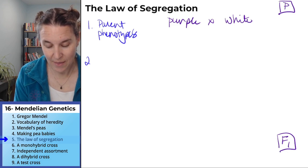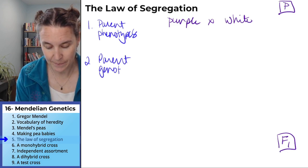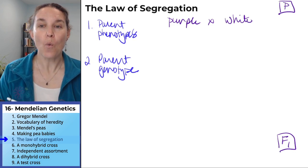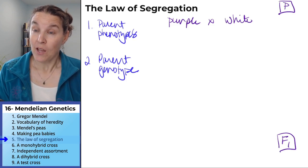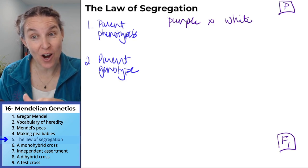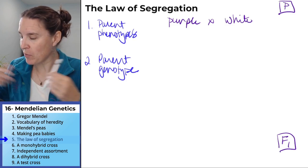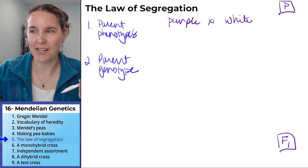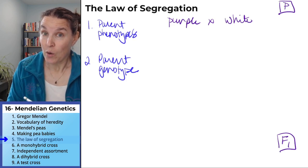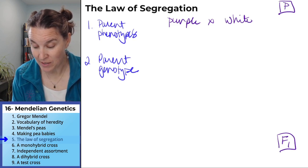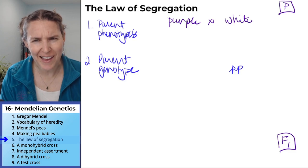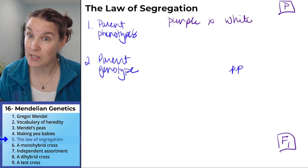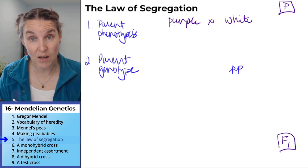Step two is to determine the parent genotype. This one isn't directly given to us. We do know that white flowers are recessive — we'll use the letter P for flower color. So white flowers are recessive, meaning the white parent's genotype has to be little p little p. We don't have any other option for a white parent. For the purple parent, though, we have options: it could be homozygous dominant or heterozygous.